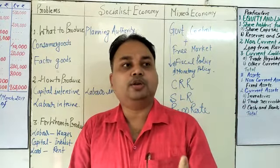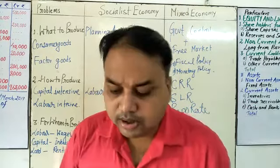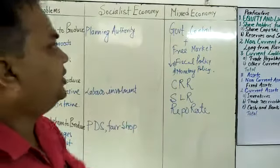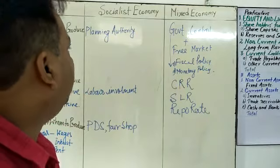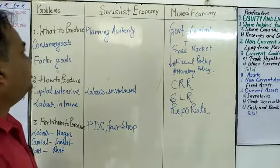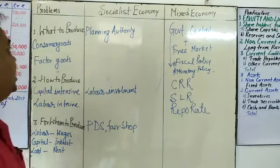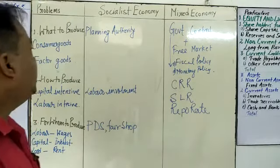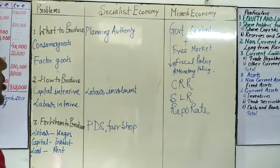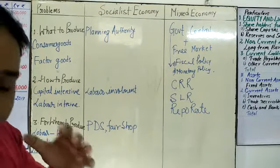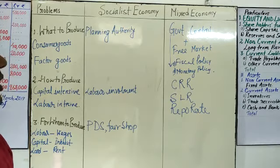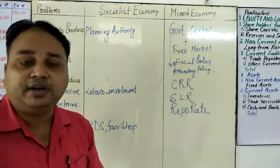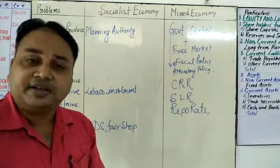So national product is converted into national income. Now let us see what happens in socialist economy and mixed economy. In socialist economy, whatever planning is done regarding what to produce, that decision is made by a planning authority. The planning authority in socialist economy is the government or the state.